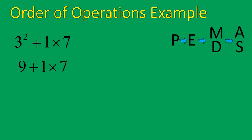So we finished the exponent part. Now we have to move on to multiplication and division. First, we're going to do our multiplication because that's what we have. We don't have any division. So we'll do 1 times 7, which gives us 7. And now we'll work on our addition subtraction. 9 plus 7 gives us 16. So our final answer for this question of 3 to the power of 2 plus 1 times 7 is 16.